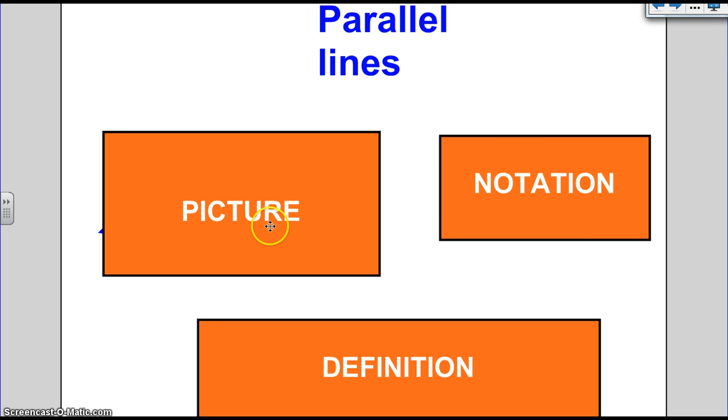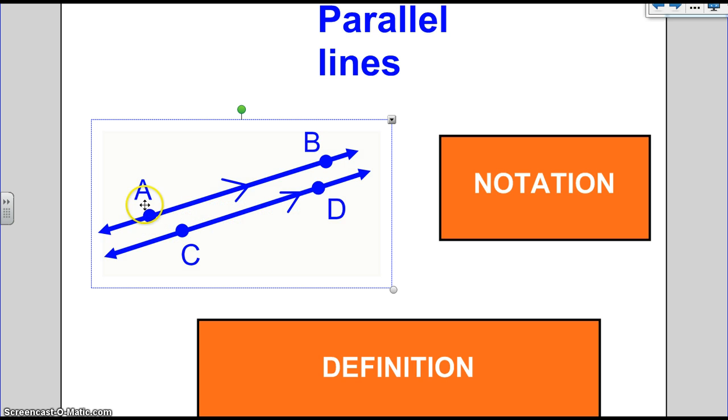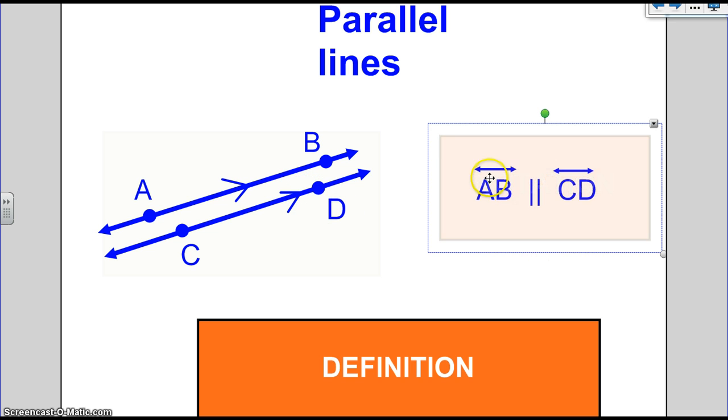Okay, examples of parallel lines. Remember these are points on a line and these two lines are parallel. The notation is with AB. Line AB is parallel to line CD. So this right here means parallel.